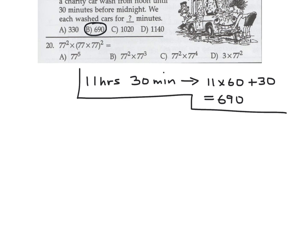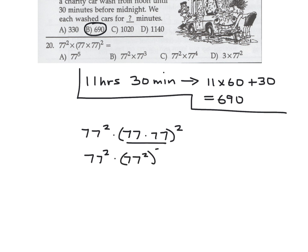77 squared times 77 times 77 squared. Write it all out: 77 squared is the base term, 77 to the first, and then squaring the whole expression gives 77 squared times 77 to the fourth, which equals 77 to the sixth. Check the answer choices — 77 to the power of 6 is C. Answer to number 20 is C.